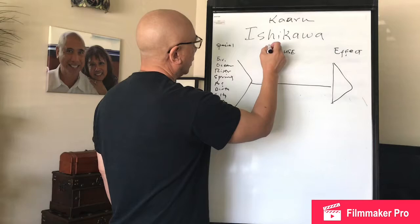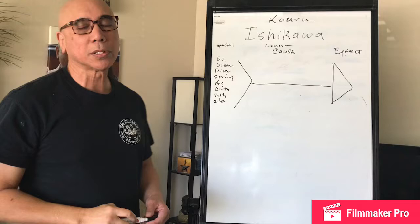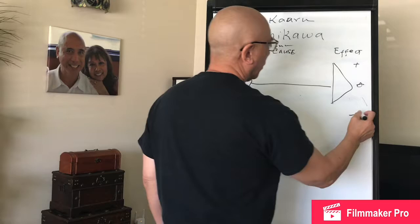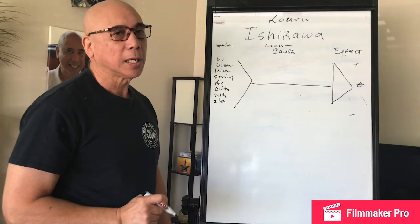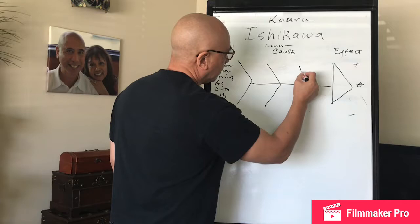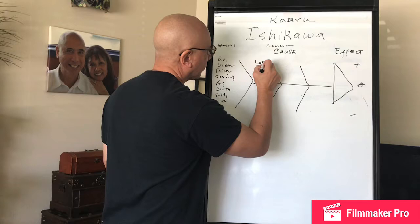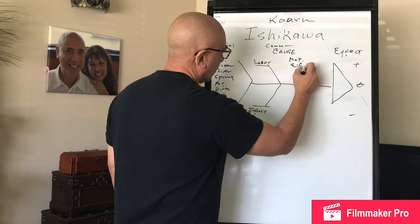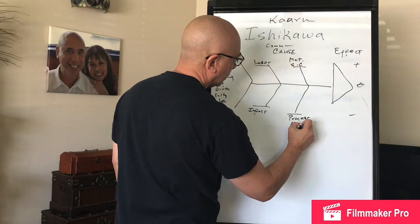You can see that the environment plays an important role. We divide our cause into something called special cause versus common cause, and that drives the effect. The effect can be positive, neutral, or negative. Because we call it a fishbone, we start to develop our spines. The first spine is labor, the second is infrastructure, another is material and supply chain, and another is process or method.